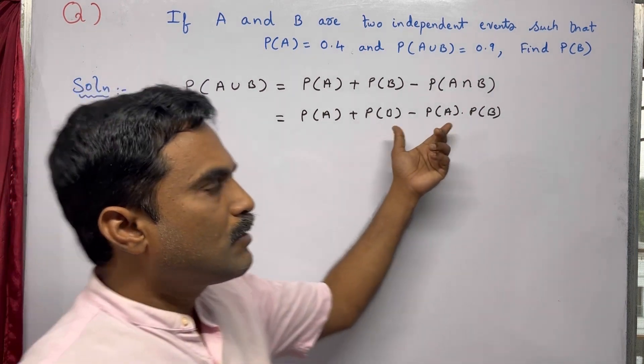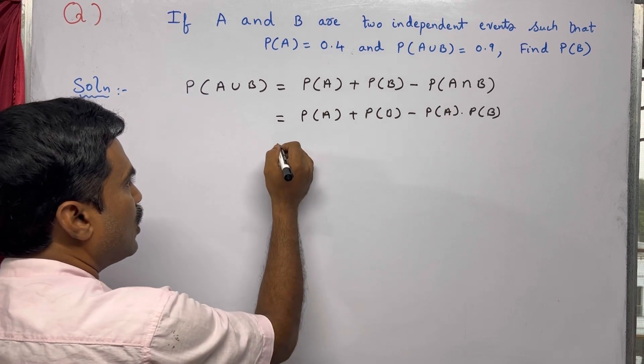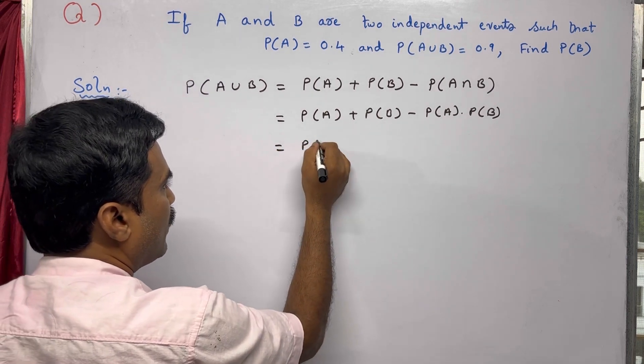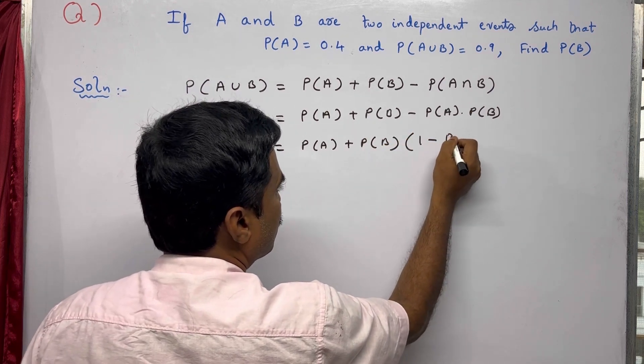From these two terms you can observe here P(B) is common, so we'll take P(B) as common. This is equal to P(A) plus P(B) times (1 minus P(A)).